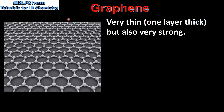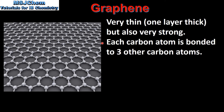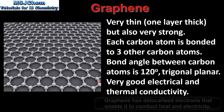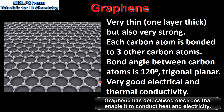And finally we look at graphene. Graphene is very thin — it's one layer thick — but also very strong. Each carbon atom is bonded to three other carbon atoms. The bond angle between carbon atoms is 120 degrees trigonal planar. Graphene has very good electrical and thermal conductivity.